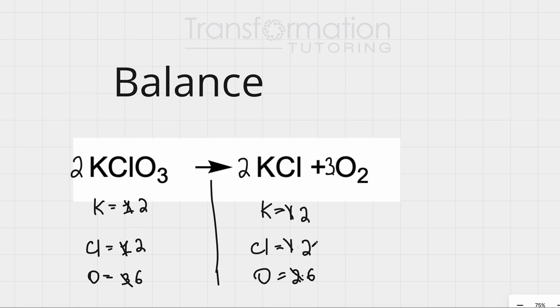My K is balanced, my Cl is balanced, and my O is balanced as well, which means that this equation is balanced. Everything is equal.